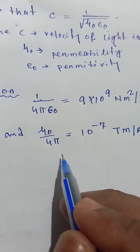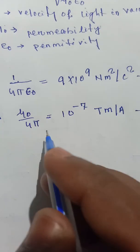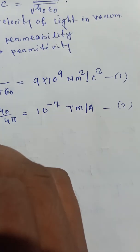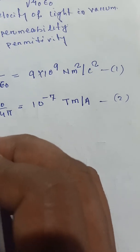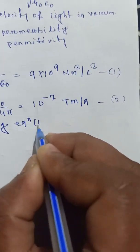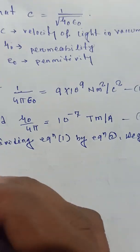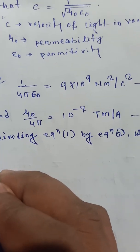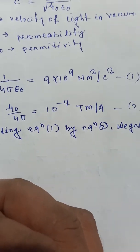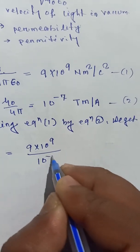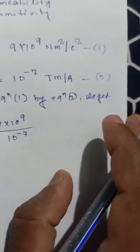Now dividing Equation 1 by Equation 2: we get (1 by 4πε₀) divided by (μ₀ by 4π) equal to 9×10⁹ divided by 10⁻⁷.